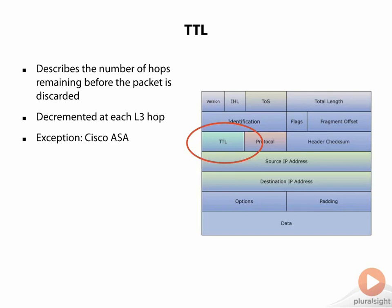The exception to this rule is with the ASA, because the ASA by default is not going to decrement the TTL — it acts as a transparent hop. We can modify that behavior, but by default it is not going to appear as a layer three hop, and therefore it is not going to decrement the TTL.